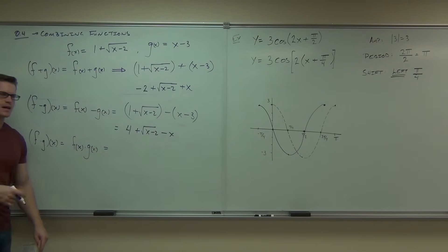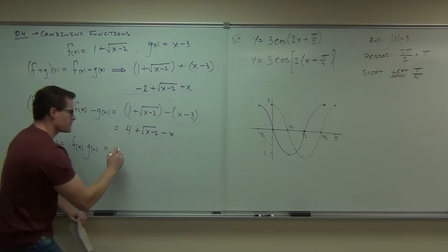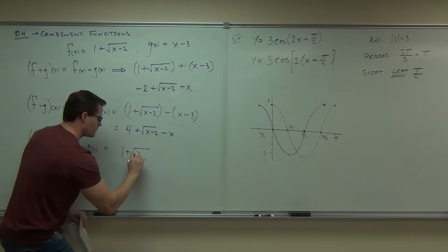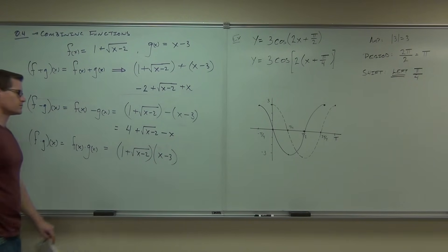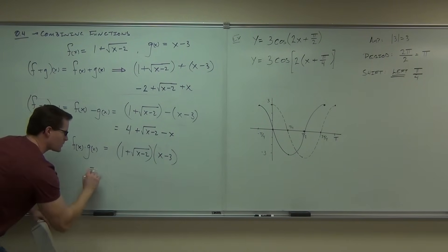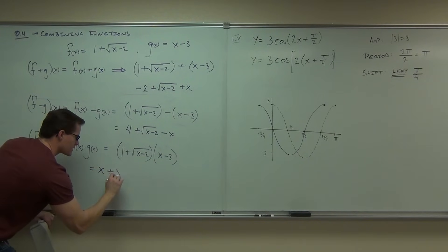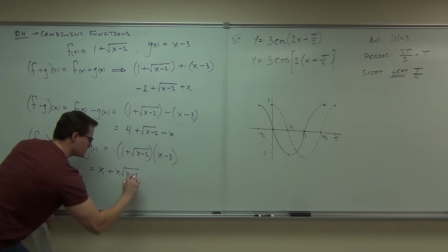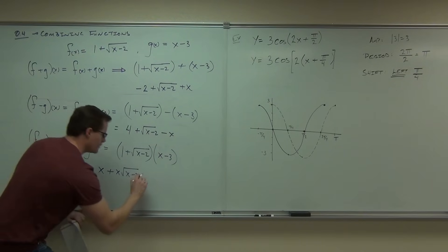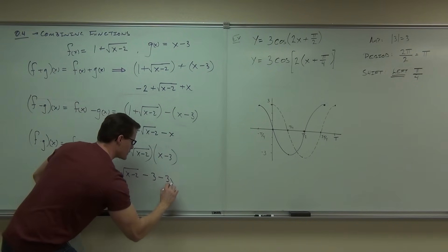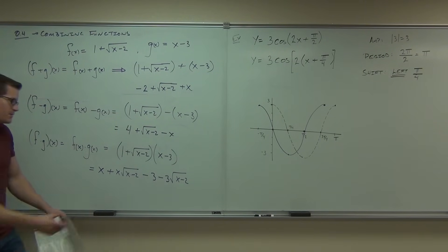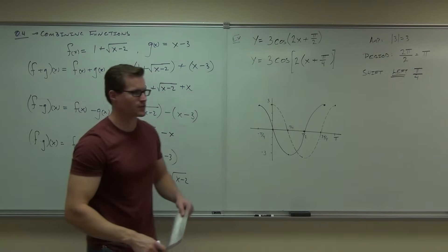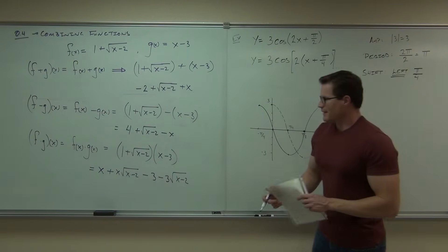If you did f(x) times g(x), that's the same thing, only you're going to have to distribute. So in our case, you'd get something like x + x√(x-2) - 3 - 3√(x-2). And there's nothing you can do to combine that. That would be it. Maybe factor that back out, but you'd be doing circular mathematics. So that's it.